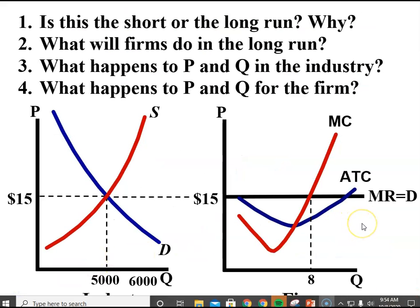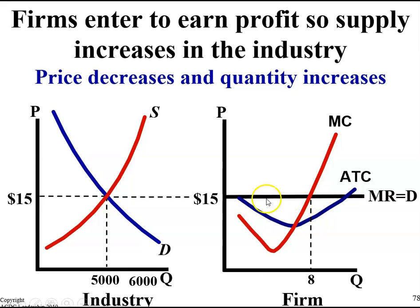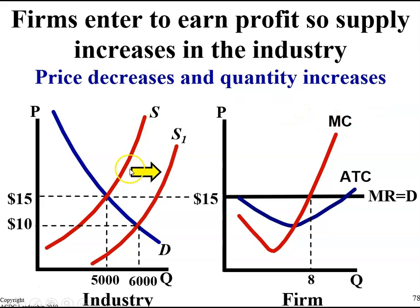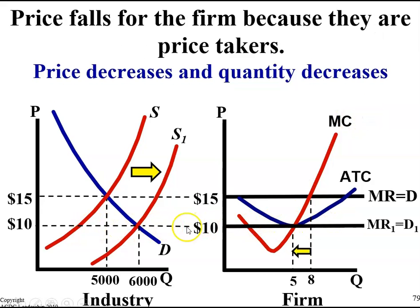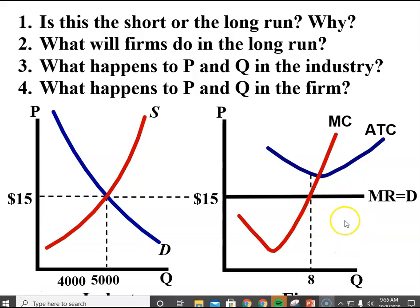In these two graphs, this industry is not in long run equilibrium. Firms will enter because there's economic profit — the price is above the ATC curve. So the price will eventually decrease and the quantity will increase. As more firms enter the industry, that will force the price down to the long run equilibrium price of $10.